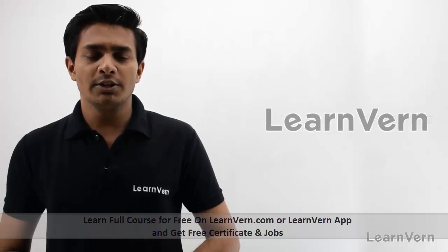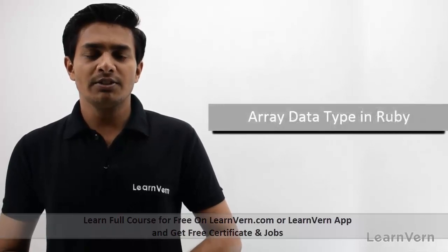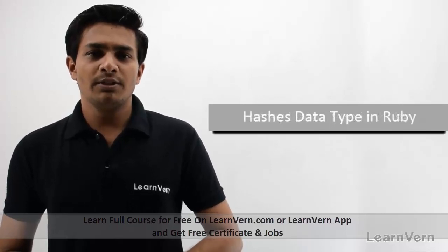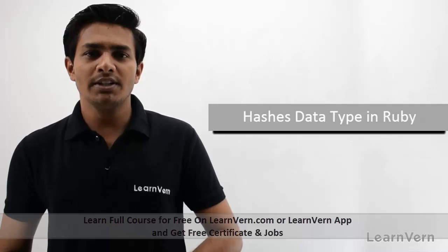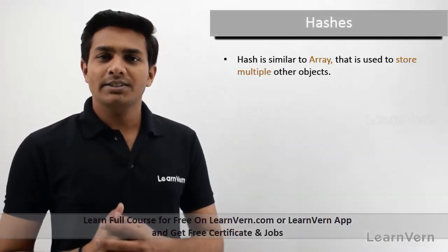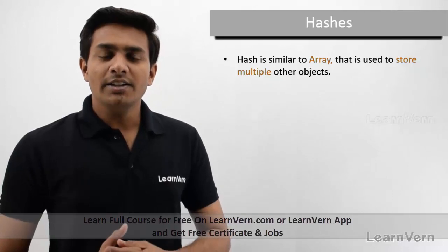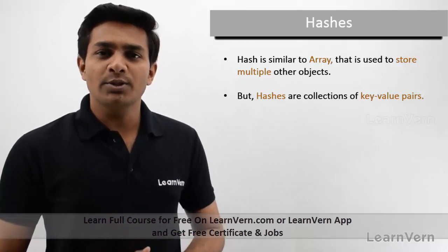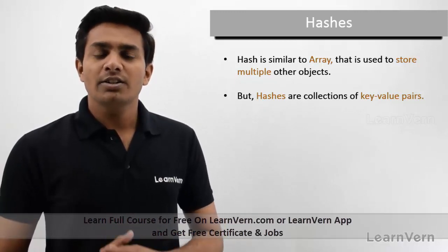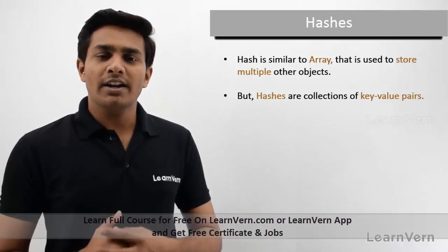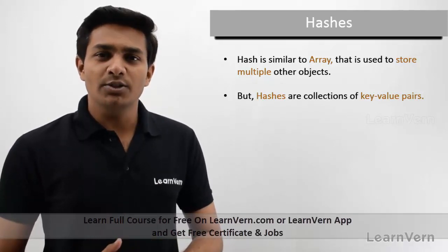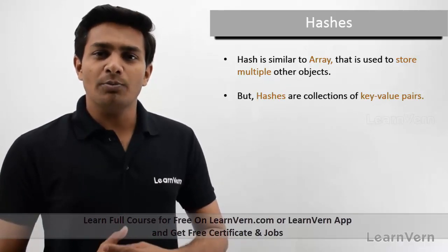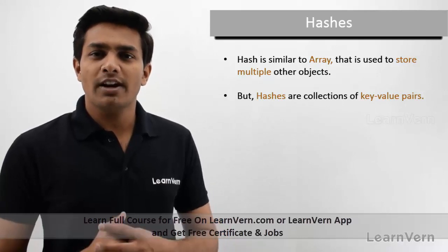Hello friends, welcome to learn1. In the previous lecture we learned about the array data type in Ruby, and today we will learn about the hash data type in Ruby. Hashes are similar to arrays. Arrays store values using an index, while hashes store values using key-value pairs. We can store multiple objects of different types in a hash.